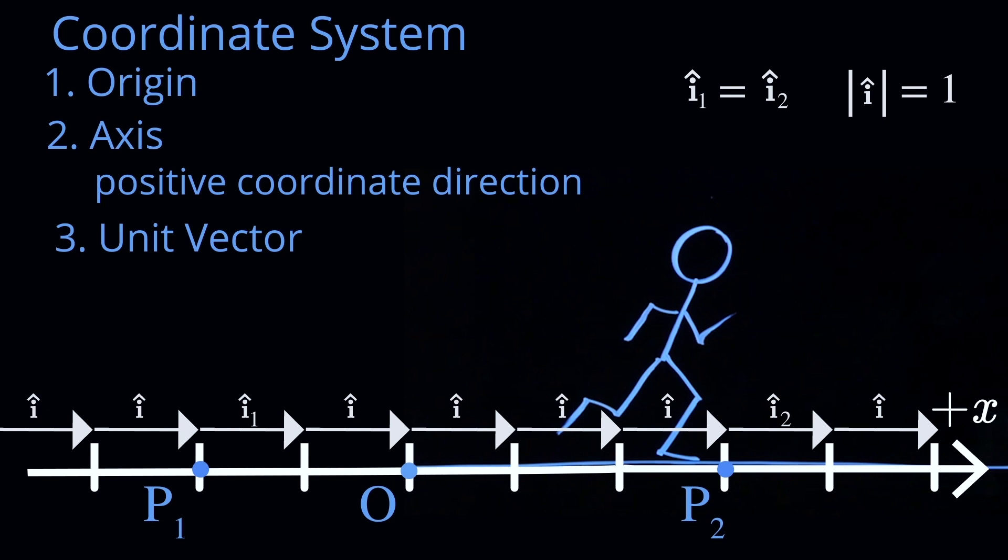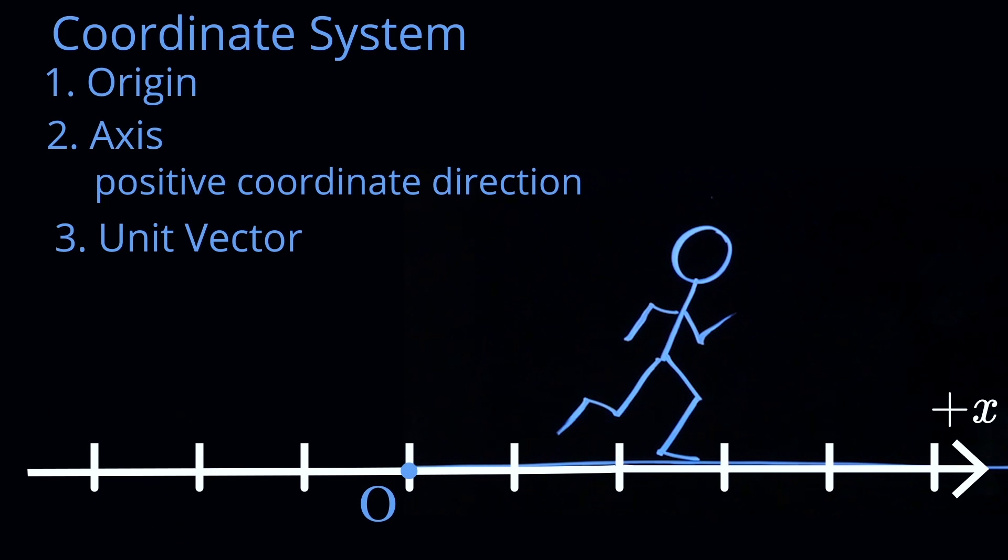So symbolically, we may draw a picture and indicate our unit vector in the positive x direction. And this is our coordinate system. And we can next begin to describe the position and the velocity of our object as it's moving along this x direction.